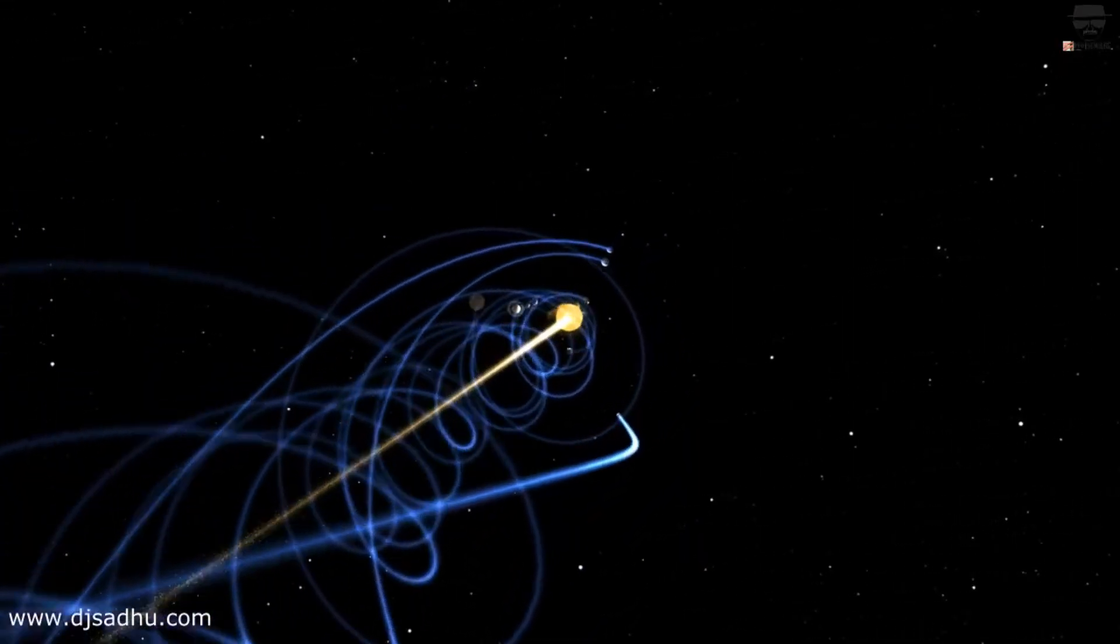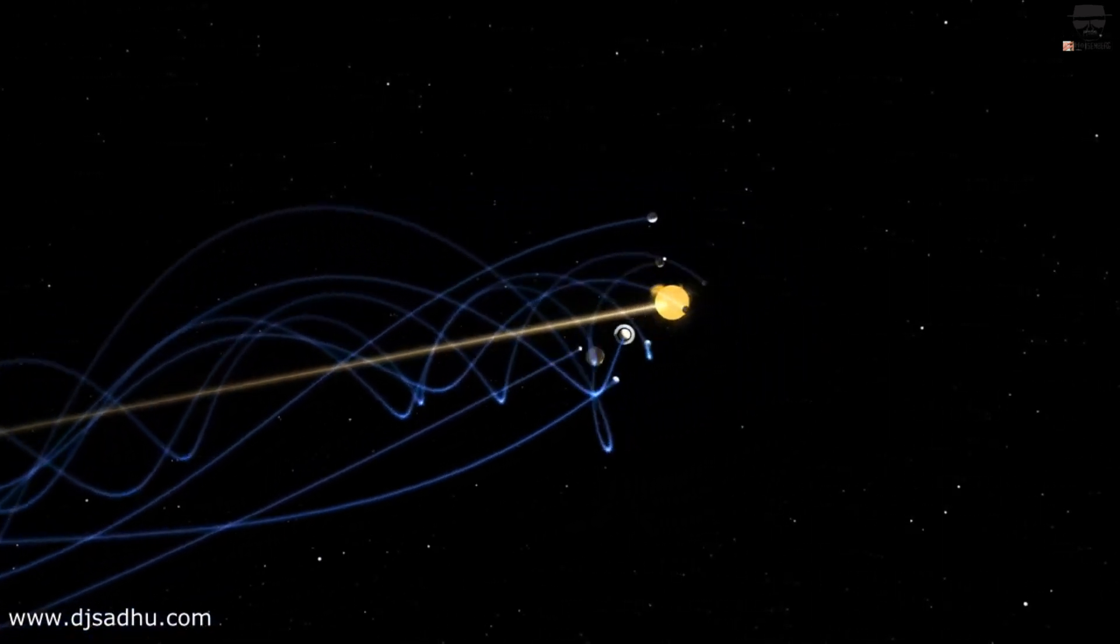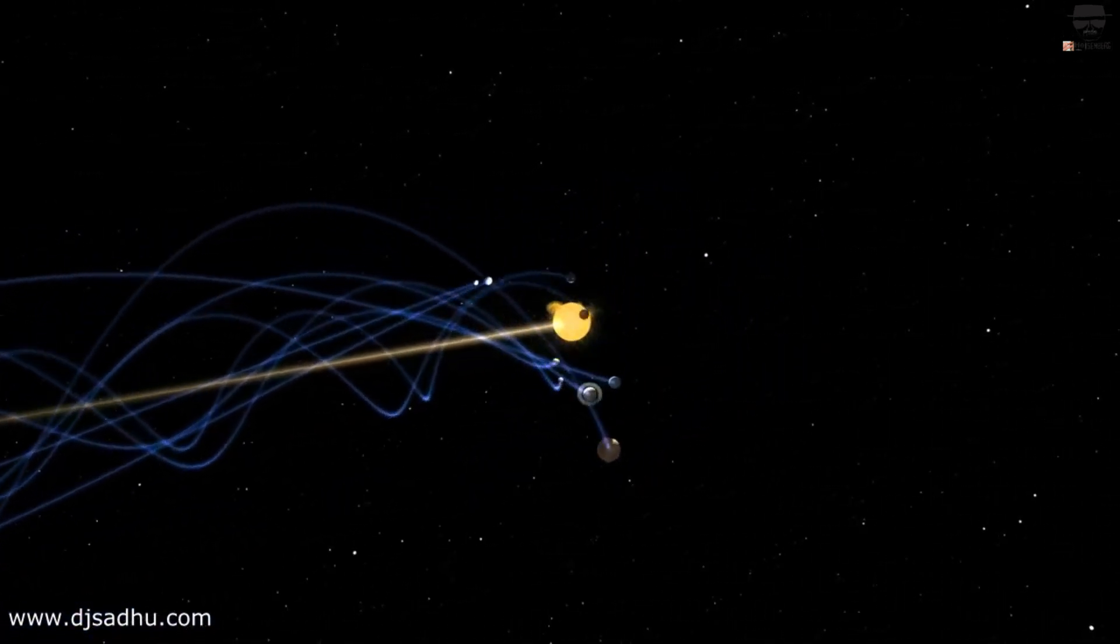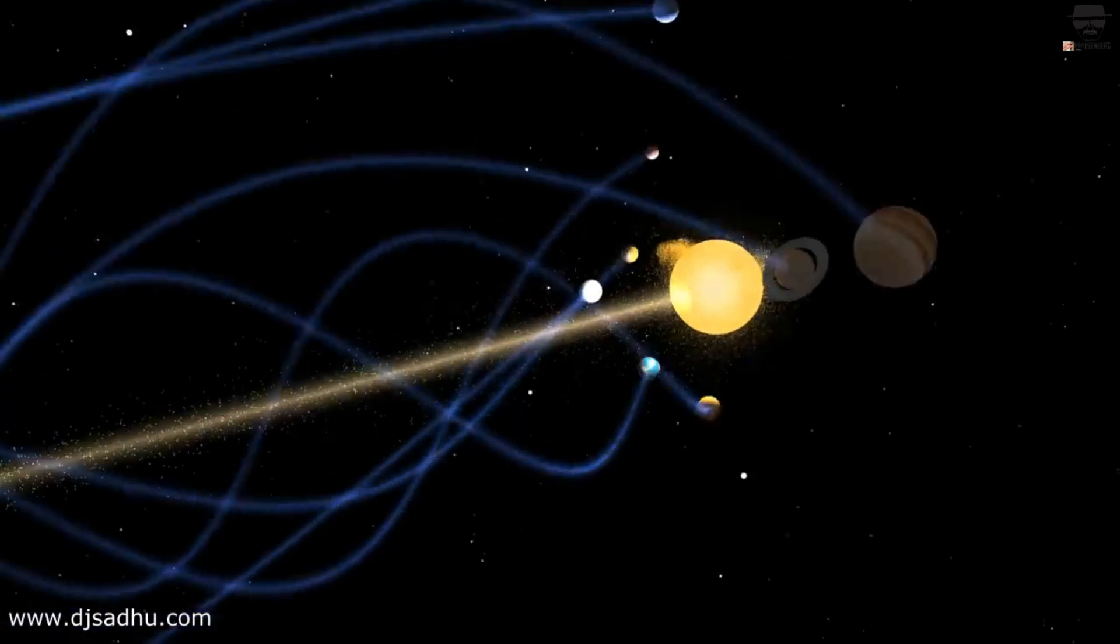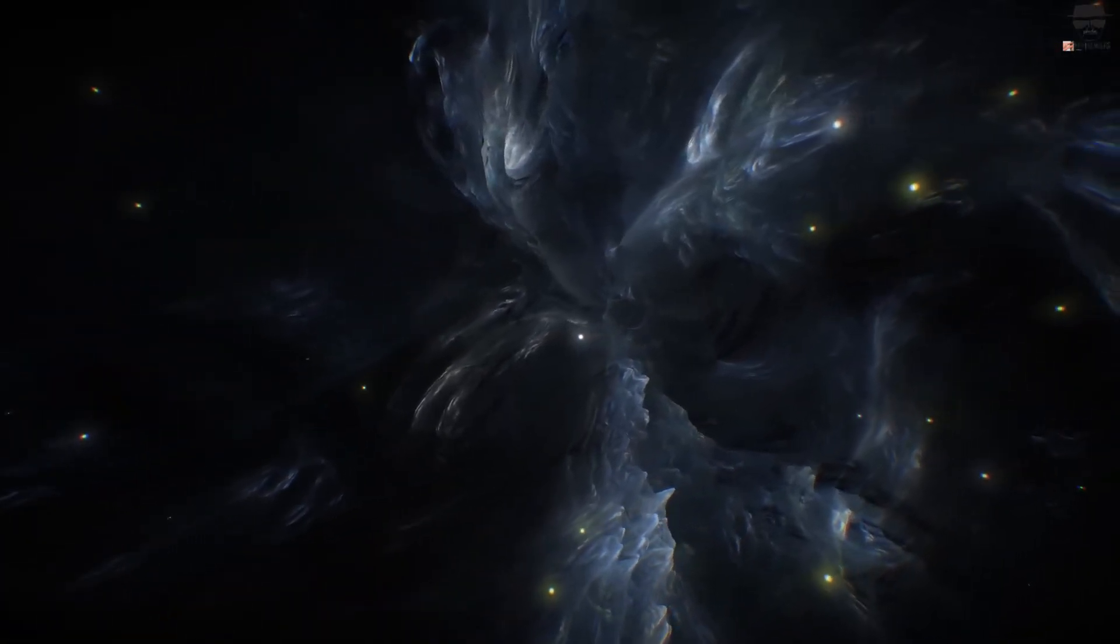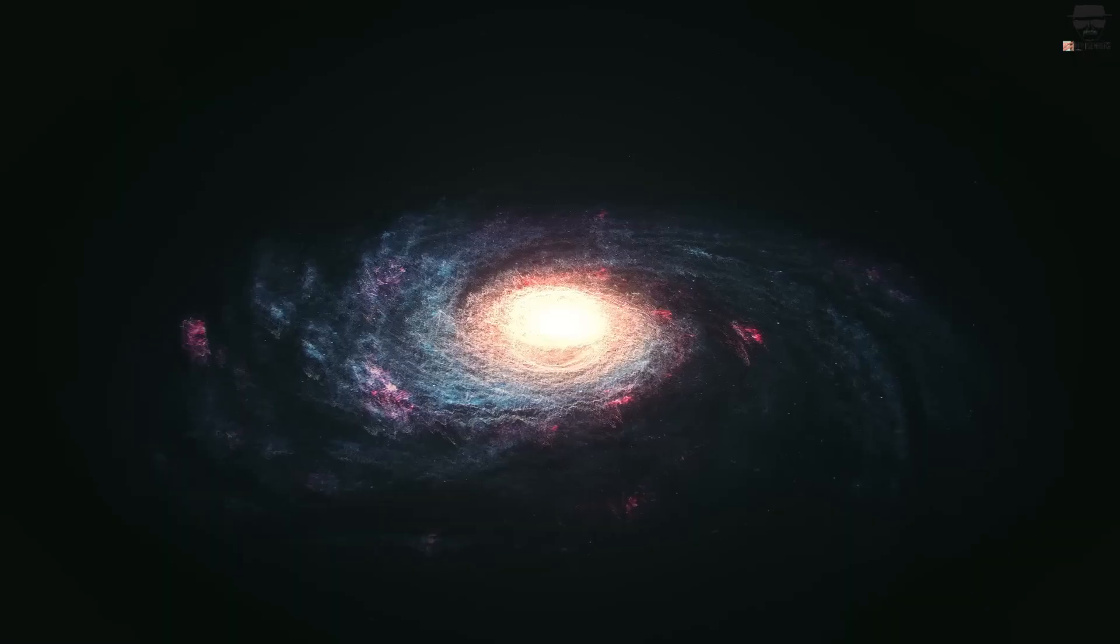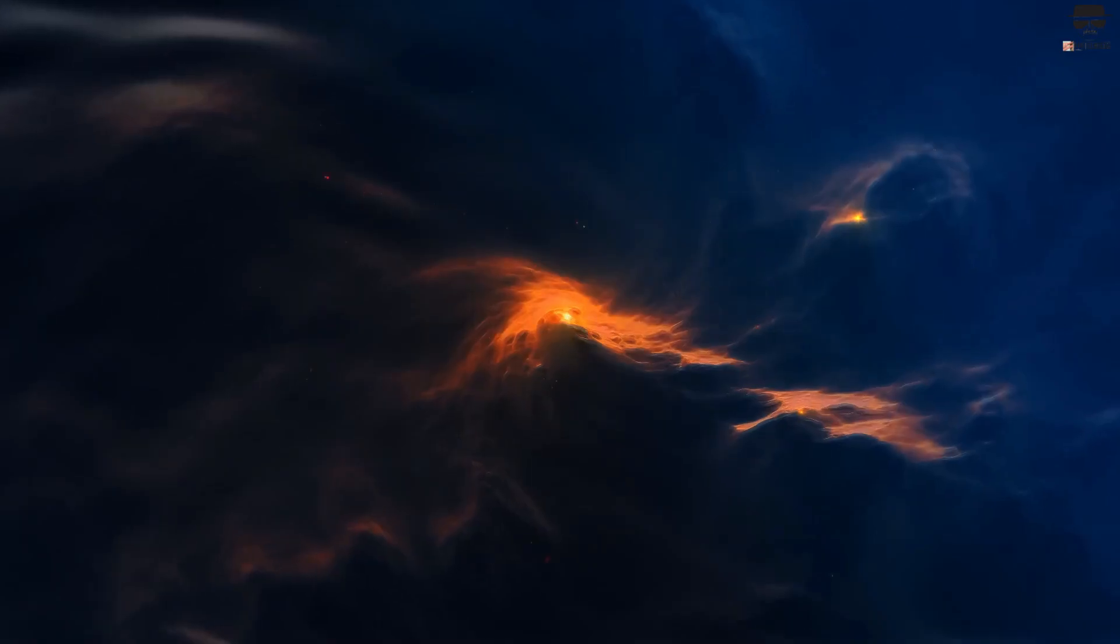Our solar system is traveling. We travel at an unimaginable speed of about 2.2 million kilometers per hour through the cosmos, including all other planets of our solar system. In doing so, we outline a circular orbit, and we do so without being consciously aware of our tour in any way, nor do we know where the journey will take us.